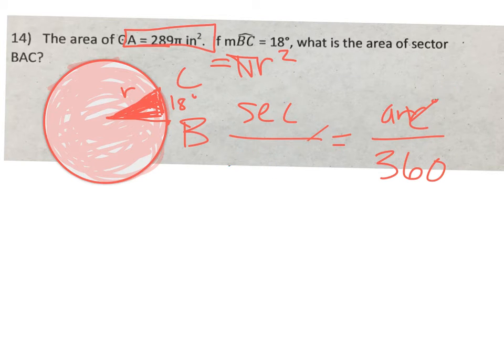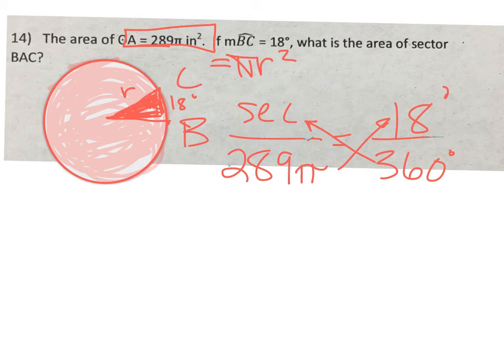This question at first glance might seem difficult, but upon further investigation, it is actually not so. 289π is the whole area, 18 degrees is the tiny one, so this is solved by cross-multiplying.